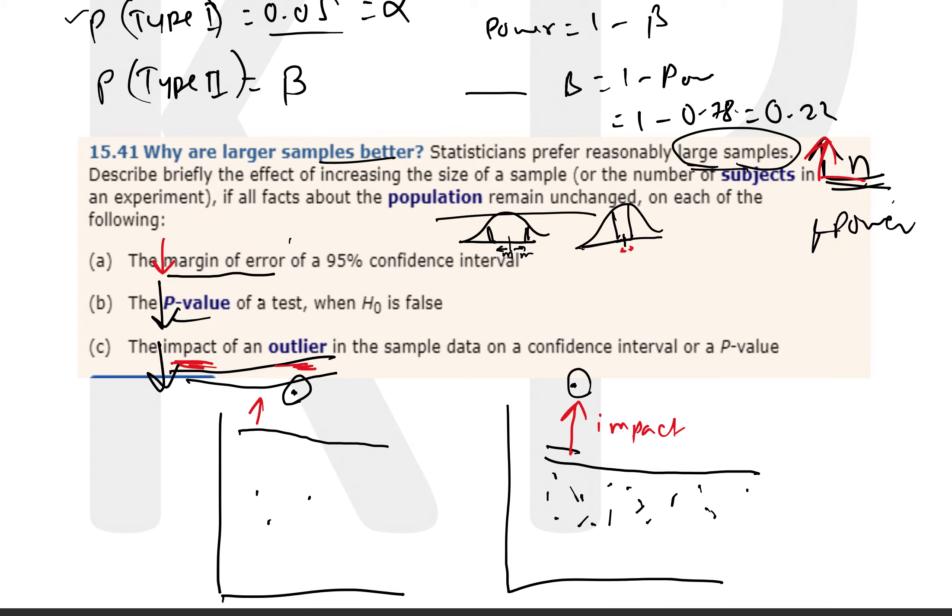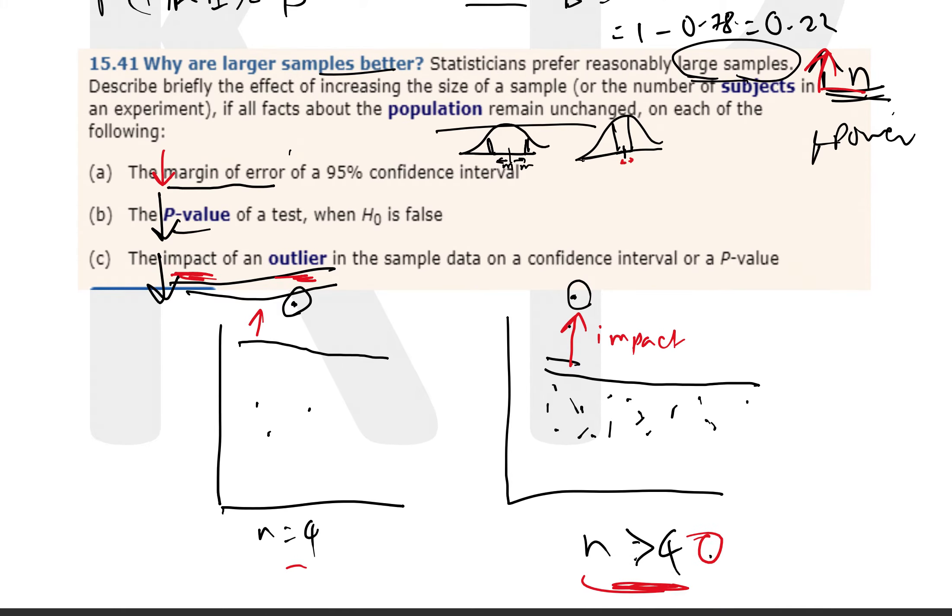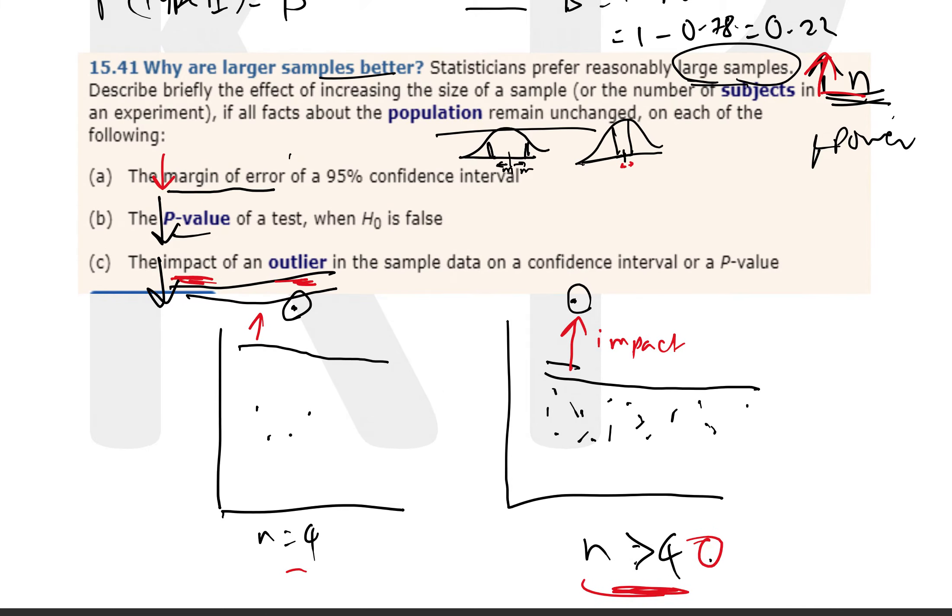And the last part is regarding the impact of outlier. It's also going to go down as the sample size n increases, and I would like to explain it making use of the regression principle. But it doesn't have to be that same result—you can also think of other things. But for the interest of time, I can explain that...